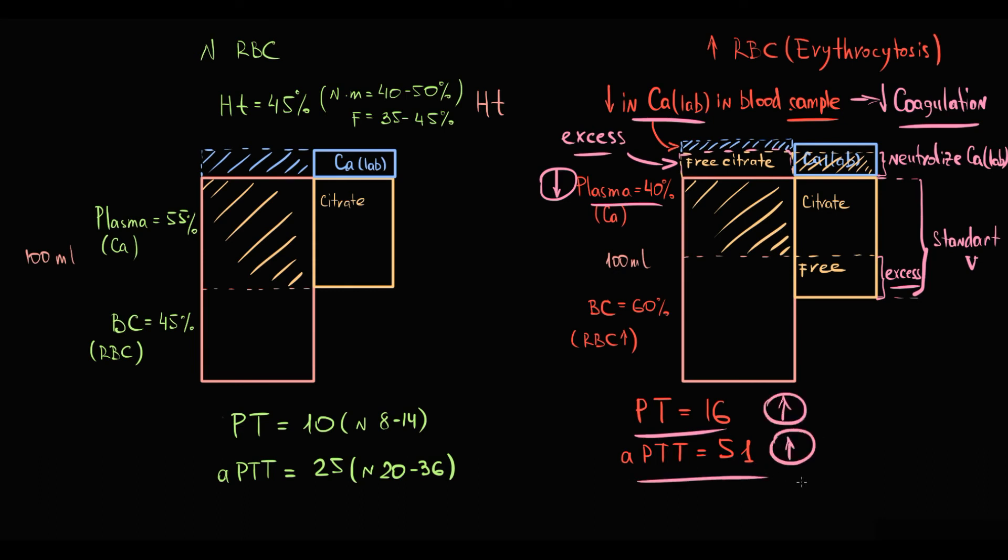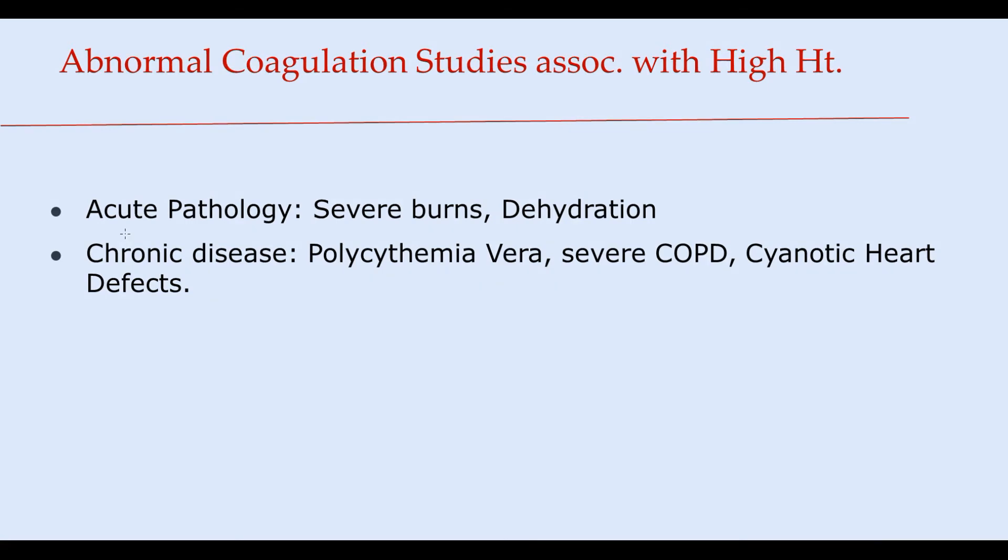Basically such severe erythrocytosis can occur in patients with acute pathology such as severe burns or dehydration where plasma volume is decreased, or in patients with chronic disease such as polycythemia vera, severe COPD, or chronic heart defects where erythrocyte quantity is abnormally high.